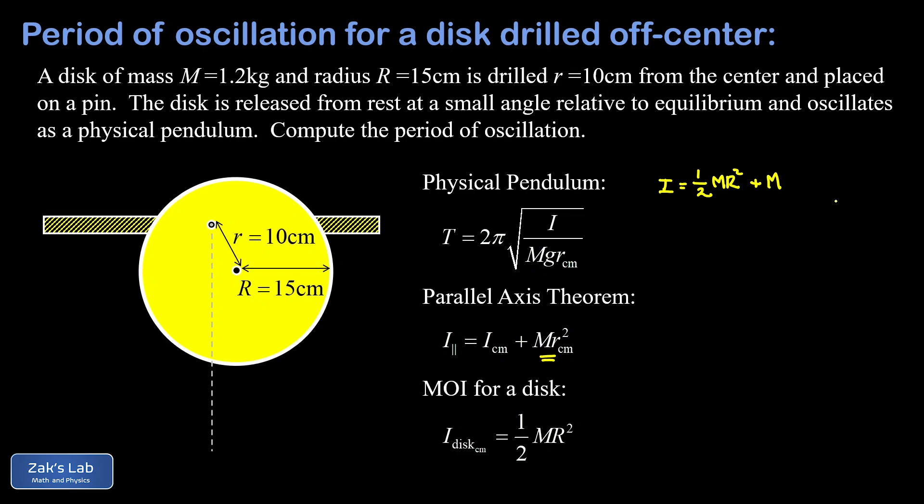That little r center of mass is the distance between the two parallel axes, so symbolically we use a little r for that in this problem. So there's our moment of inertia. Then we just plug into the formula for the period of a physical pendulum. We have 2π times the square root of I in the numerator—that's one half M·R² plus M·r² divided by Mg times r center of mass.